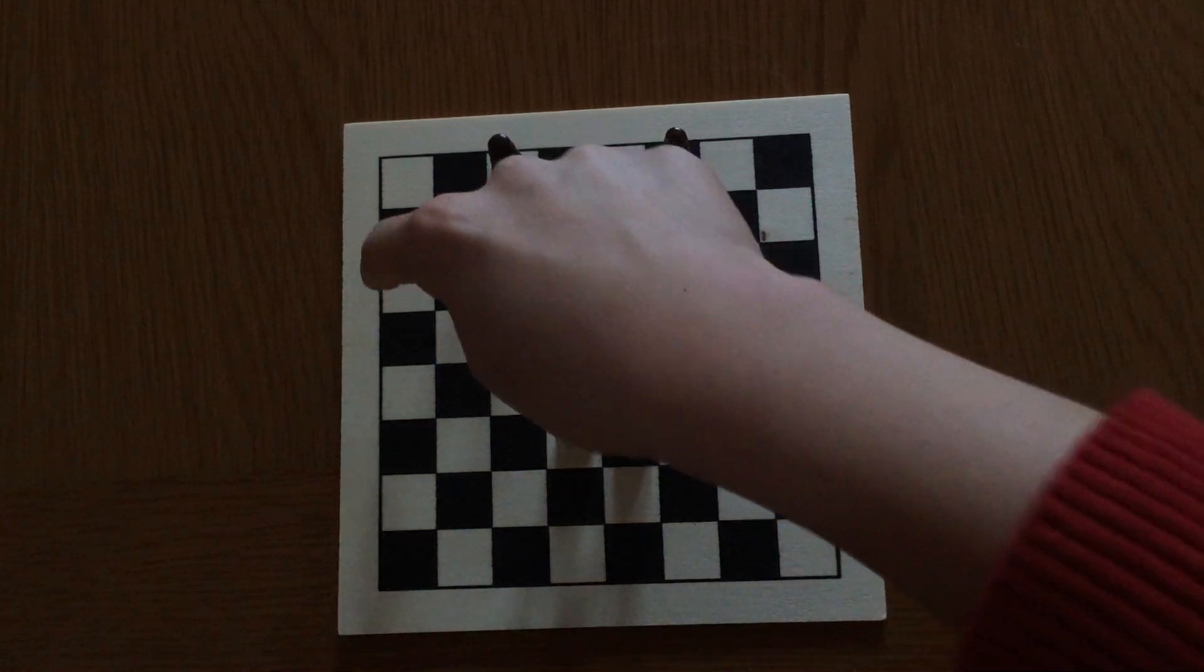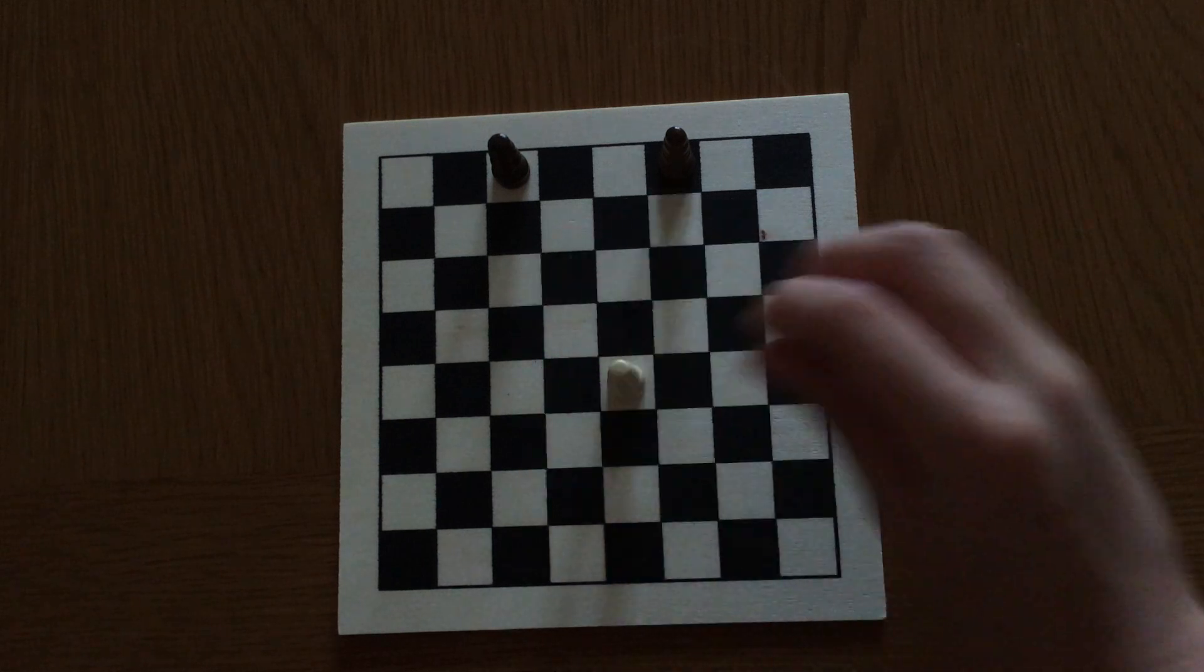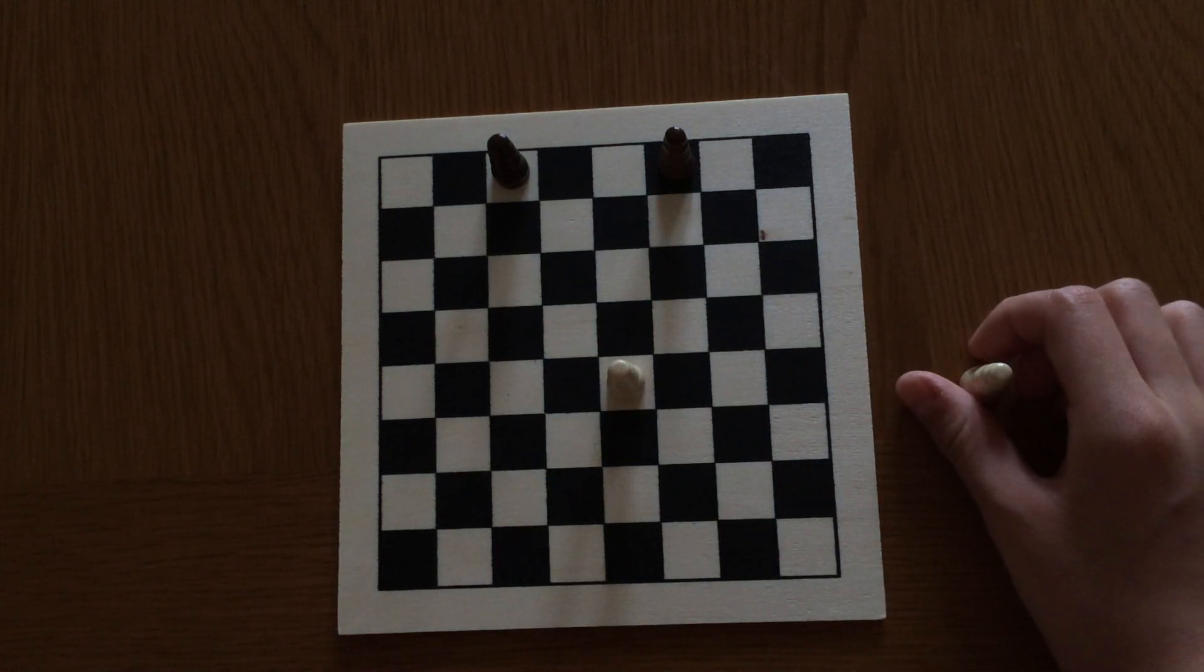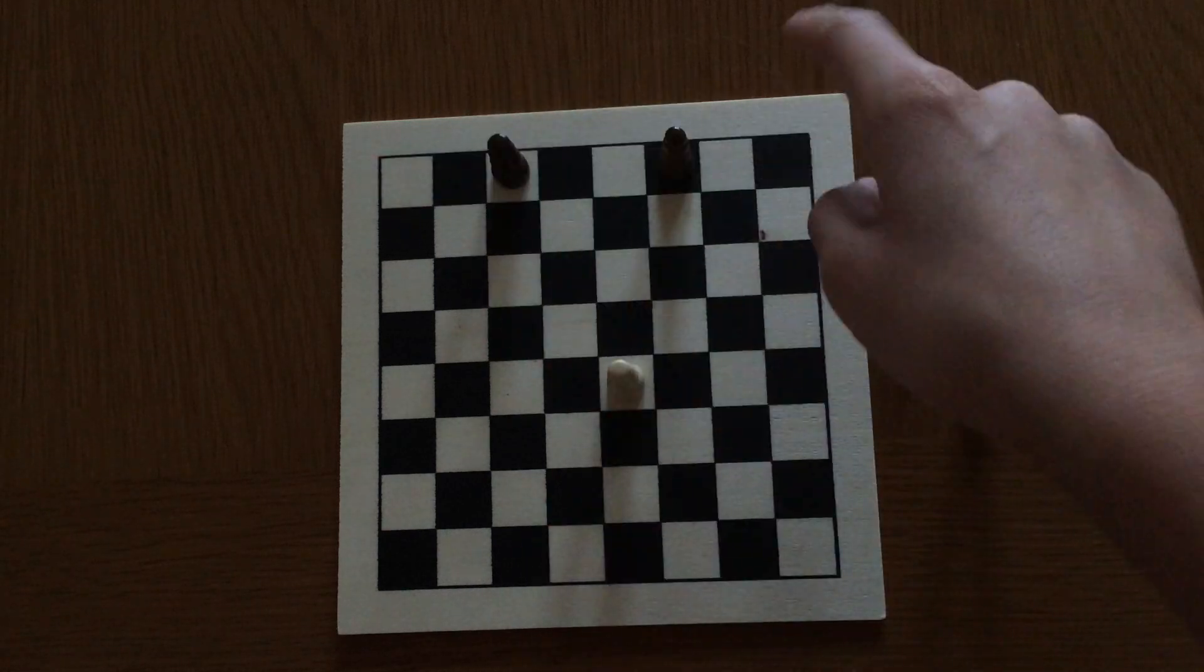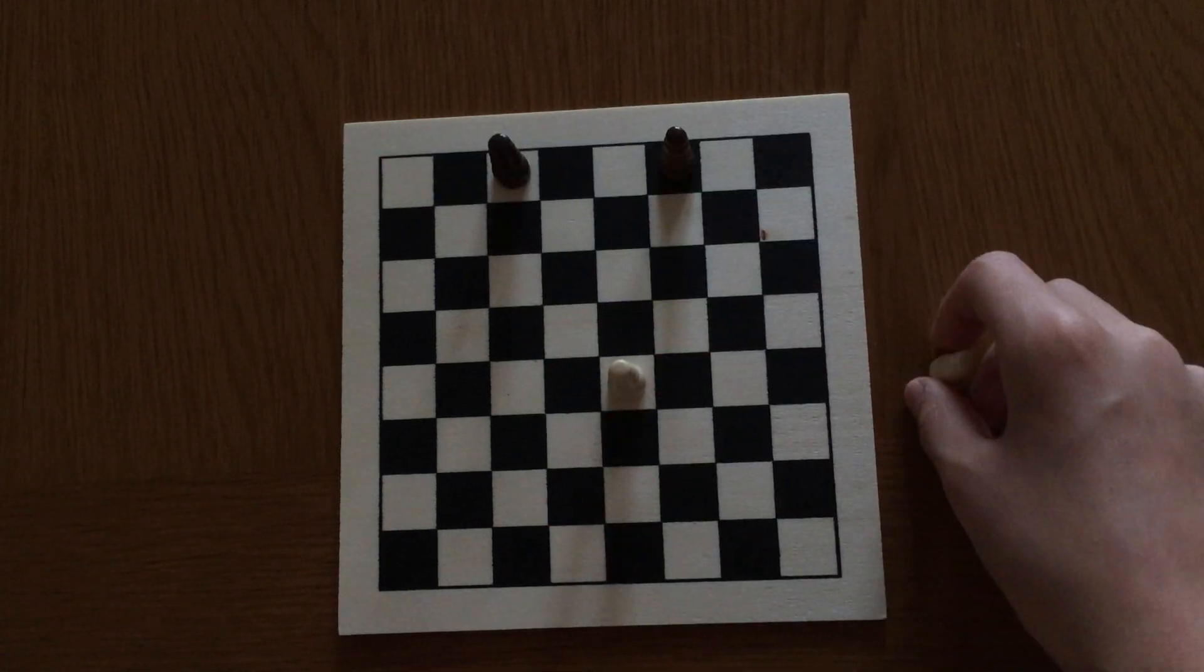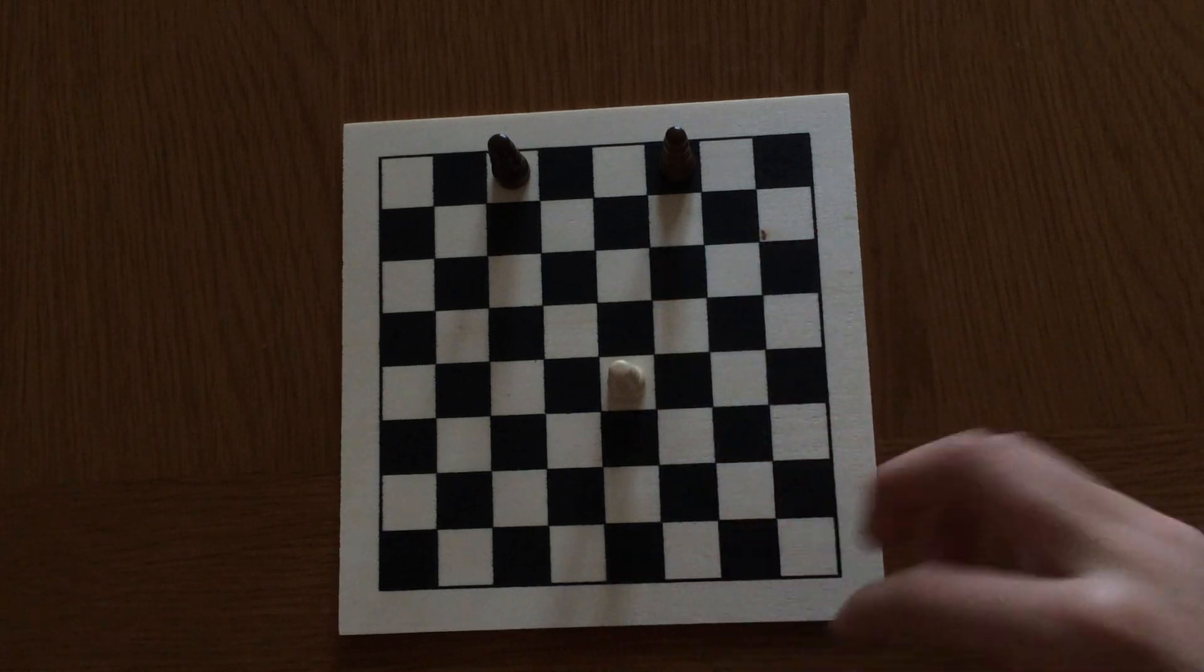You can see here in the middle, the bishop controls thirteen squares while if it's here it only controls seven squares.